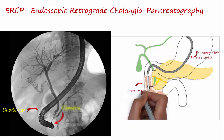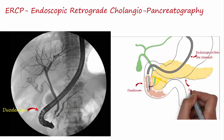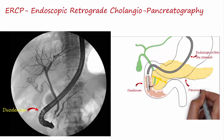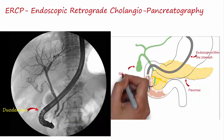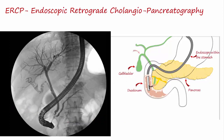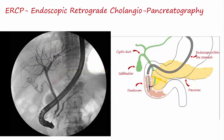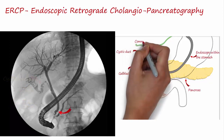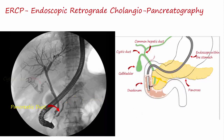With the help of a camera at the end of the endoscope, the physician can see inside the stomach and duodenum. A thin plastic tube is then inserted through the endoscope into the ampulla of Vater, which is the opening of the common bile duct and pancreatic duct into the duodenum. A radio-opaque contrast medium is then injected through the tube, which makes all parts of the biliary tree — including intrahepatic ducts, common hepatic duct, cystic duct, gallbladder, common bile duct, and also the pancreatic duct — visible on the x-rays.